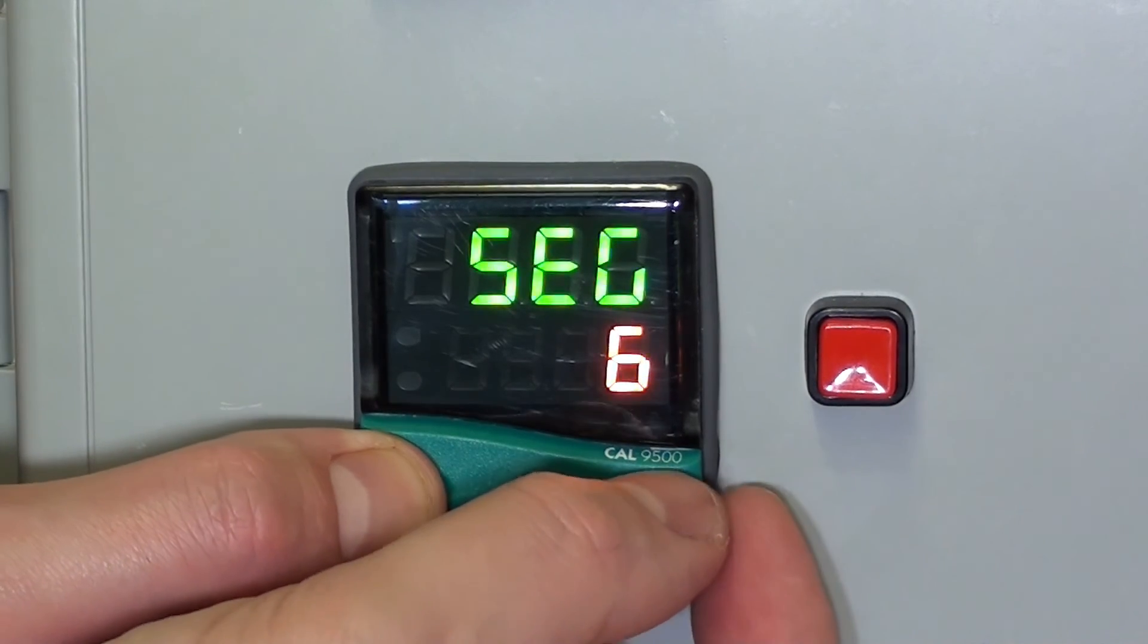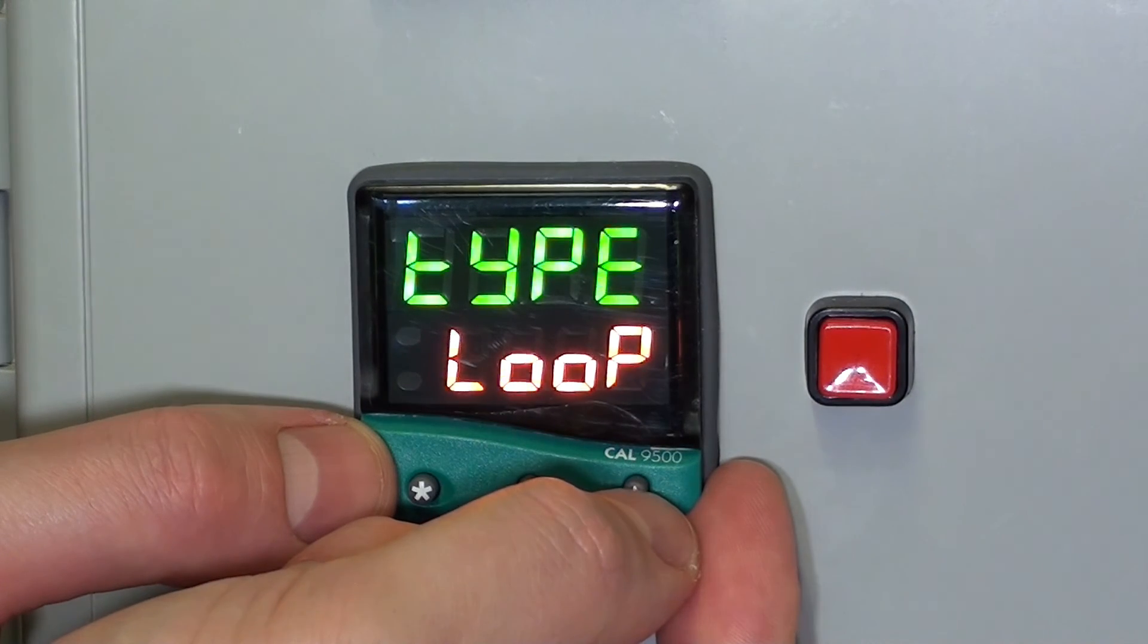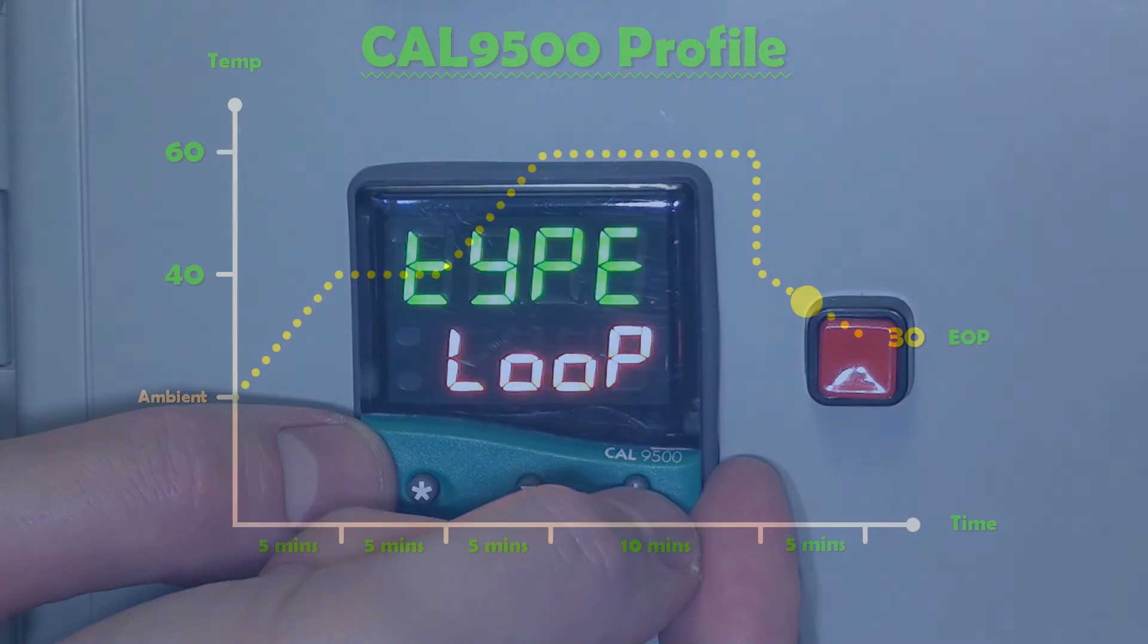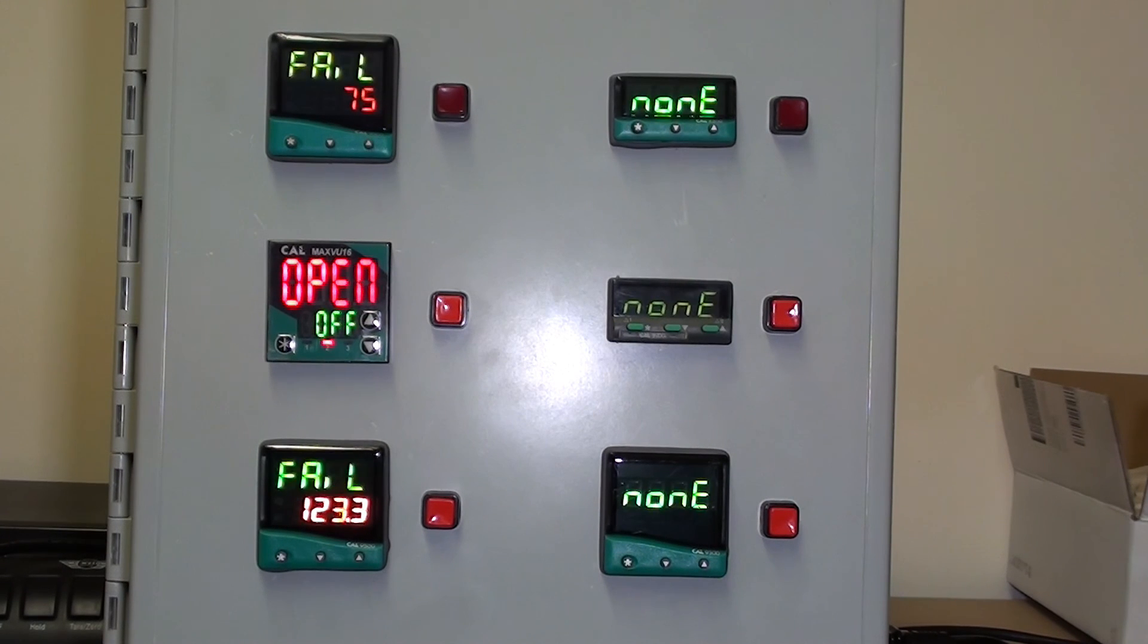And finally, segment 7 is where we want it to loop. So, at the end of the program, it will loop. For further details of CAL products, please visit our website, wardindustries.co.uk.